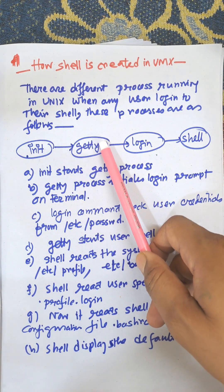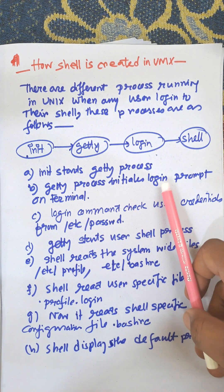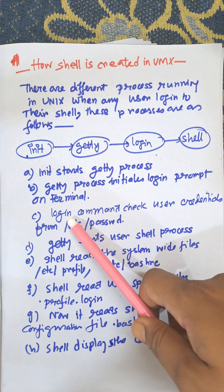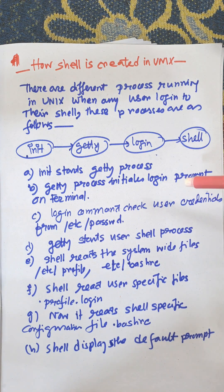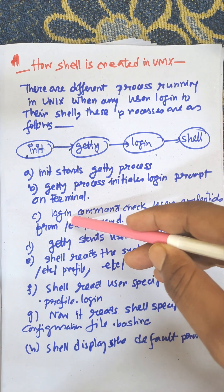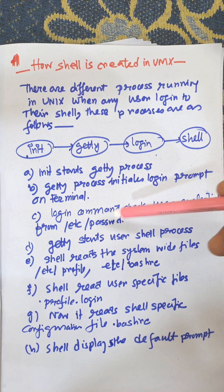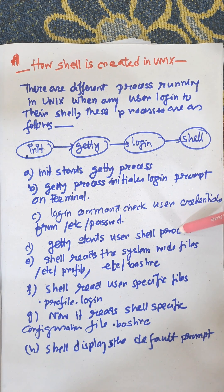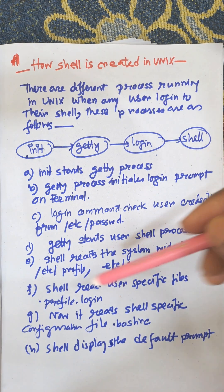The getty process activates and initiates a login prompt on the terminal. The login command checks user credentials — it will check the user credentials from /etc/passwd. Then getty starts the user shell process, and the shell reads the system-wide files.